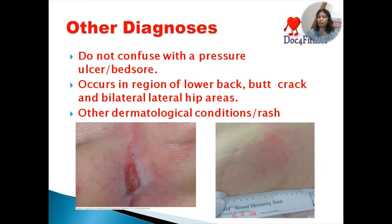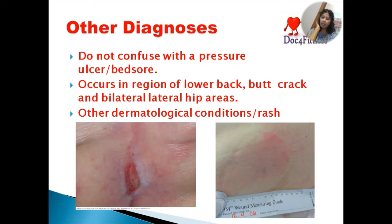A Stage 1 pressure ulcer is red but the skin is intact and not broken down. The next stage shows an actual ulceration or opening in the skin. Pressure ulcers can occur in some of the same regions as diaper rash — the buttocks and lower back — but also in the outer portion of the hips and bony prominences, the upper back, the back of the head, and the heel region, depending on the patient's position. Other dermatological conditions can also cause a rash in the diaper region, so don't confuse them with diaper rash. Accurate diagnosis is very important because the treatment is very different.